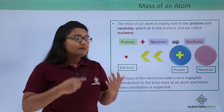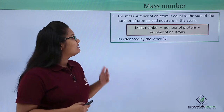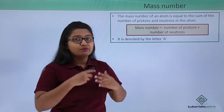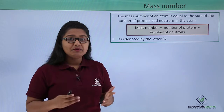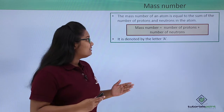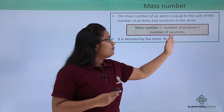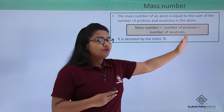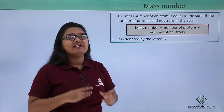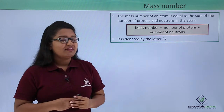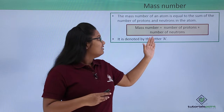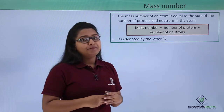The mass number is therefore defined as the total number of nucleons present inside the nucleus of an atom. That is, it is the sum of the number of protons and the number of neutrons in an atom. The mass number is denoted by the letter capital A.